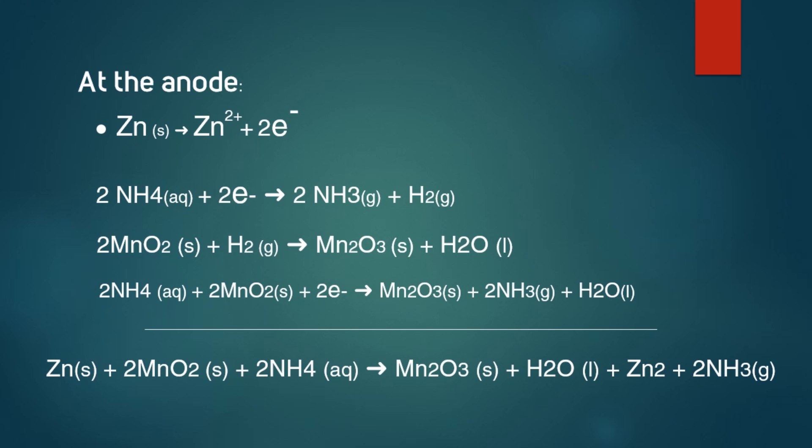Due to these reactions, chemical energy gets converted into electrical energy. This energy then flows from the battery to the connected device through the outer circuit.